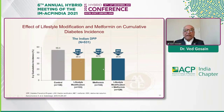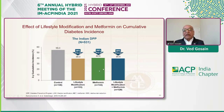In the Indian study, both lifestyle modification and metformin had approximately 26% to 29% decreased risk. Somewhat surprisingly, there was no additional benefit of adding metformin to lifestyle modification. So done well, lifestyle modification itself may be sufficient.